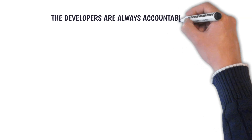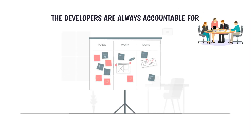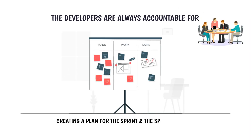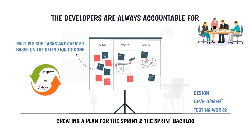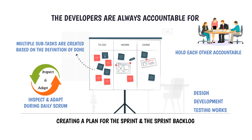Developers are always accountable for creating a plan for the sprint — the sprint backlog — and the plan may include design, development, and testing works. Typically, developers create multiple subtasks for backlog items based on the definition of done. They adapt their plan each day toward the sprint goal during daily Scrum by inspecting work done and work remaining. They hold each other accountable as professionals and continuously improve their relationship and collaboration while adopting Scrum values.